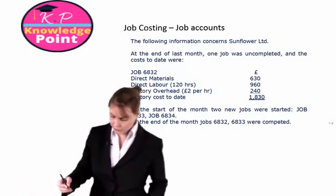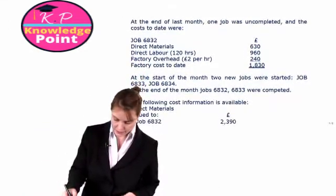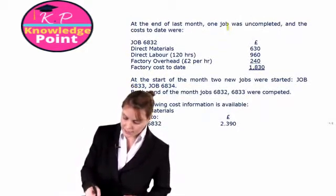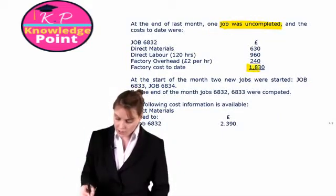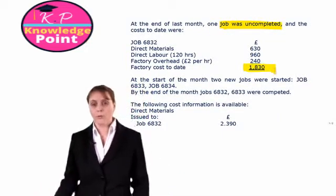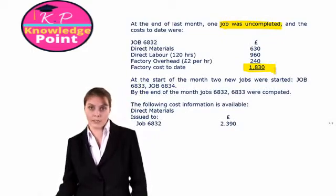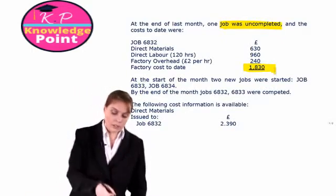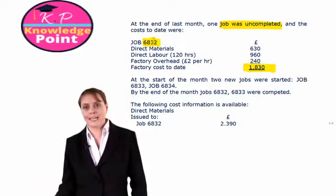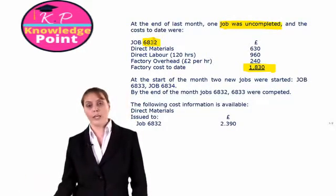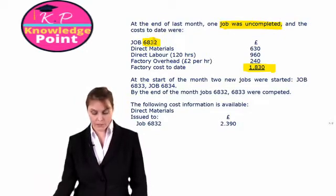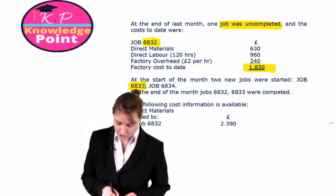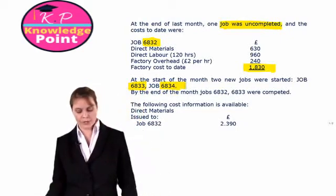The following information concerns Sunflower Limited. At the end of last month, there was an incomplete job, and the cost to date in total were £1,830. So at the start of the month, the opening balance on job 6832 was £1,830. At the start of the month, two further jobs were started: 6833 and 6834.